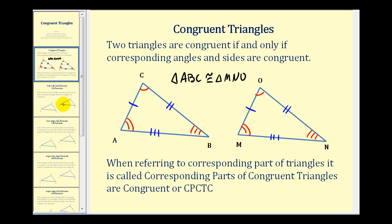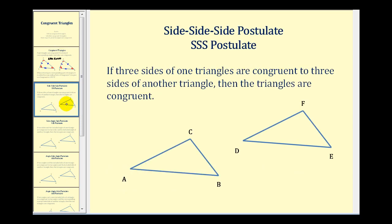Now let's talk about the different ways to prove that two triangles are congruent. The first is the side-side-side postulate, often referred to as the SSS postulate. If three sides of one triangle are congruent to three sides of another triangle, then the triangles are congruent. So if we know those two sides are congruent, those two sides are congruent, and those two sides are congruent, we know that these two triangles are congruent.